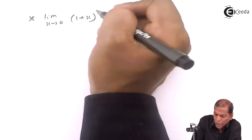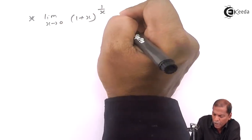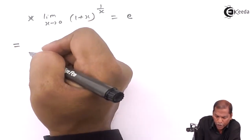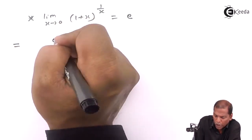So the next step will be e raised to minus 2 by 3 in the numerator and upon e raised to 1 by 3 in the denominator.